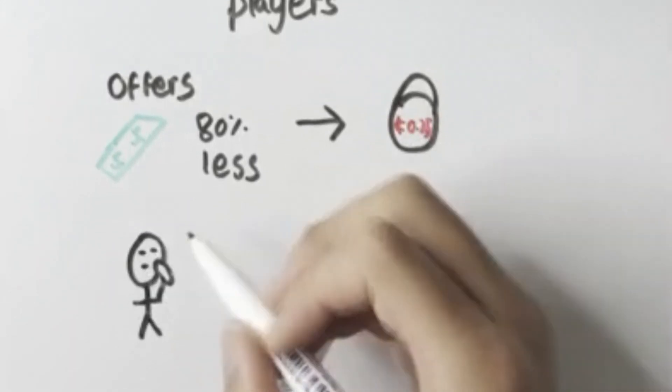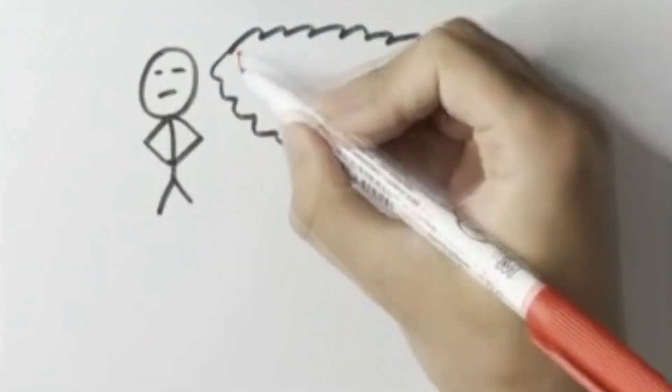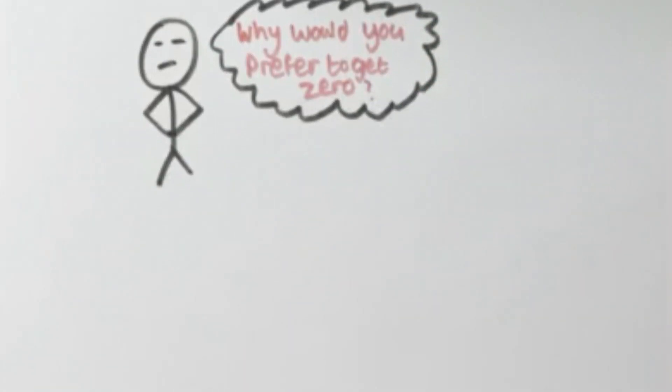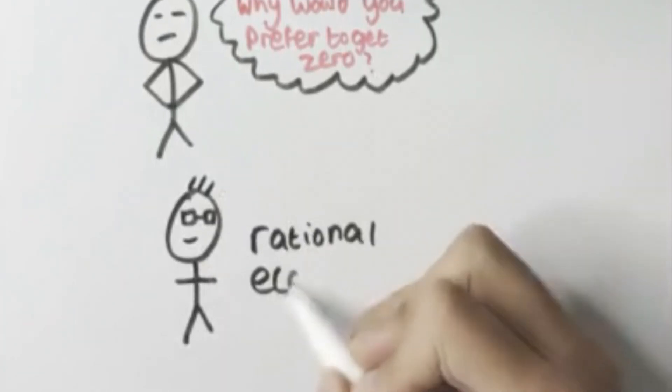They then struggled to understand why the other players were rejecting the offers, with one of them actually stating that, the other players are stupid, how can you reject a positive amount of money and prefer to get zero? They unfortunately couldn't predict how the other players would feel about their offers, and so they played the game the same way a rational person would.